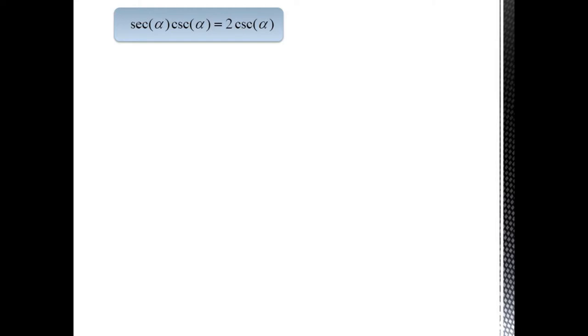Here's a slightly different problem we can solve by factoring. Secant alpha of cosecant alpha equals 2 cosecant alpha. By bringing the cosecant over to the left-hand side, we now have a common factor of cosecant alpha. So we can factor this out. This gives us cosecant of alpha times secant alpha minus 2 equals 0. Breaking these apart,